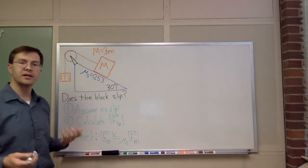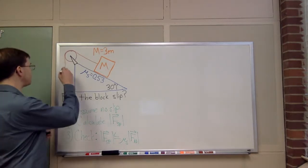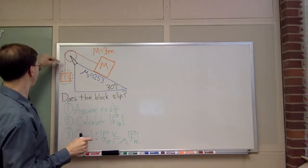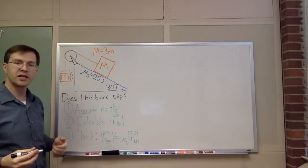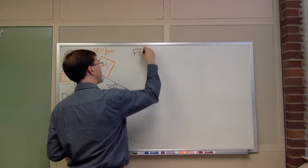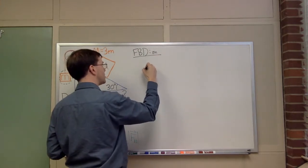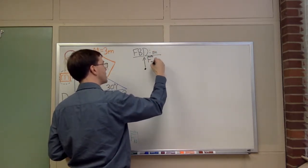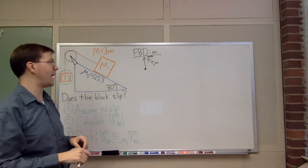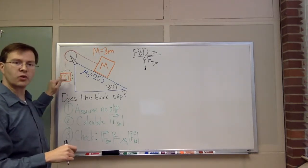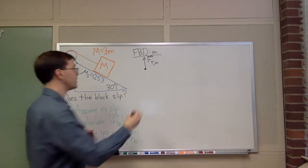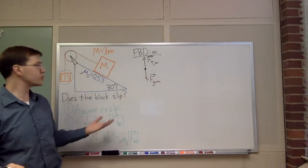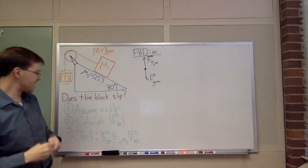For the first free body diagram — the little m system — I draw a dotted line around my system to separate it from its environment. There's one contact point: the tension force up above. So in the notation of the textbook, the tension force is represented as F_T on the little m, just to indicate the force of tension on that little mass. That's the only contact point with the outside world on this little m. There's also the long-range force of gravity on the little m, pulling downward. Those are the only two forces on this mass.